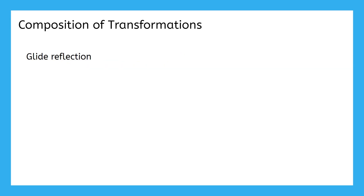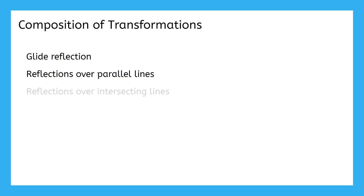A glide reflection is one of the compositions we're going to do an example of today. In addition, we're going to look at reflections over parallel lines and reflections over intersecting lines. We're going to complete an example of each of these, so let's get started.